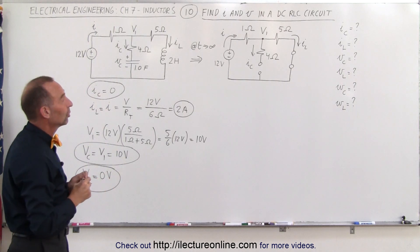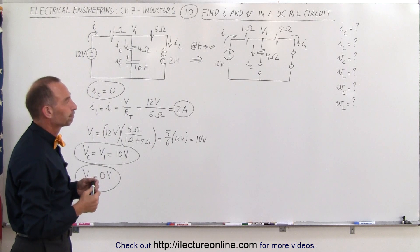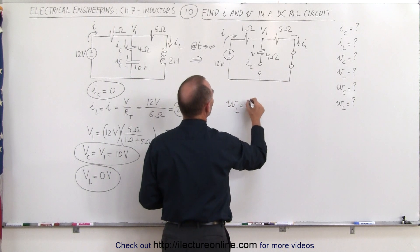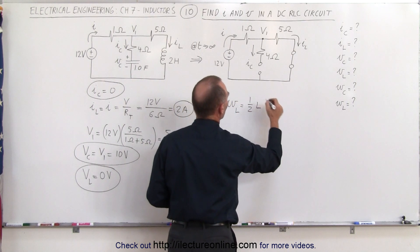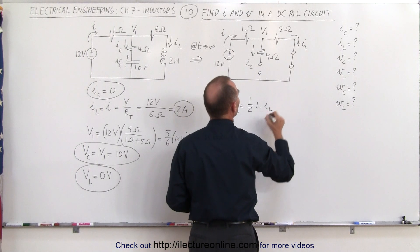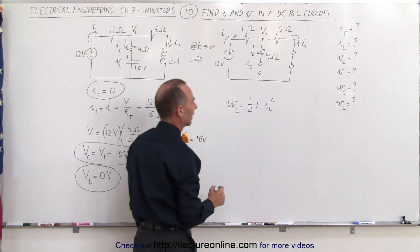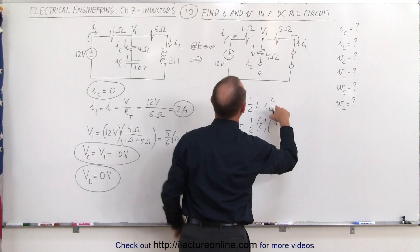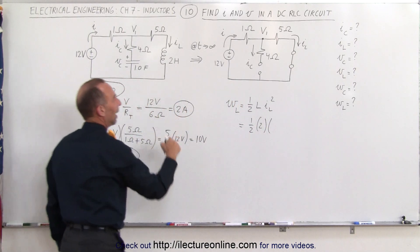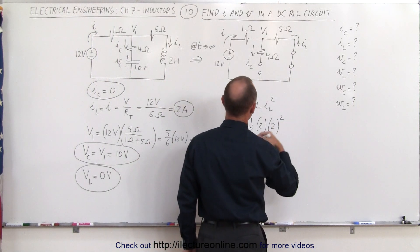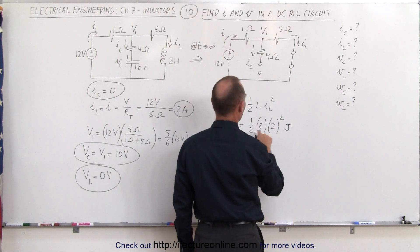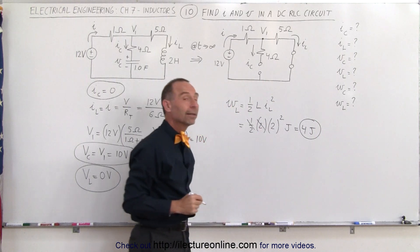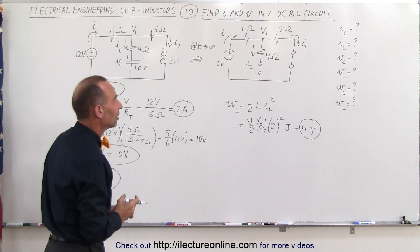Finally, we need to find the energy stored in both the capacitor and the inductor. For the inductor, the energy is equal to one-half times the inductance times I sub L squared. That equals one-half times 2 Henrys times (2 amps) squared, which equals 4 joules. That's the energy stored in the inductor due to its magnetic field.